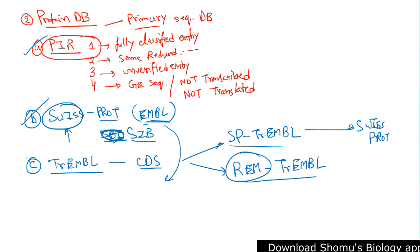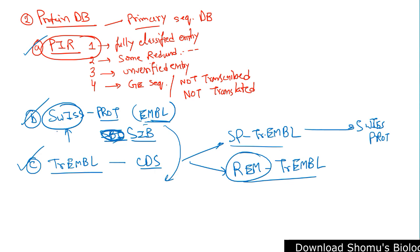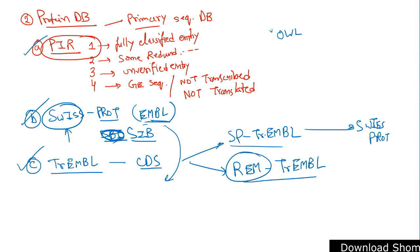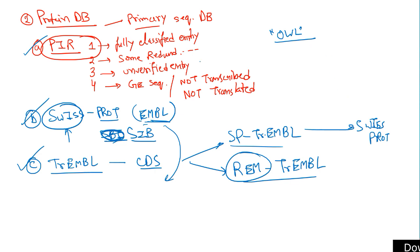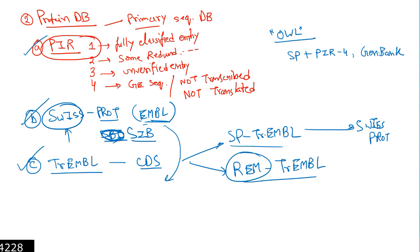These three are very common examples of primary sequence databases. Apart from those, there are other databases. For example, OWL — a question often asked is: what kind of database is OWL? It is a composite of four primary databases: Swiss-Prot, PIR type 4, GenBank, and NRL-3D.